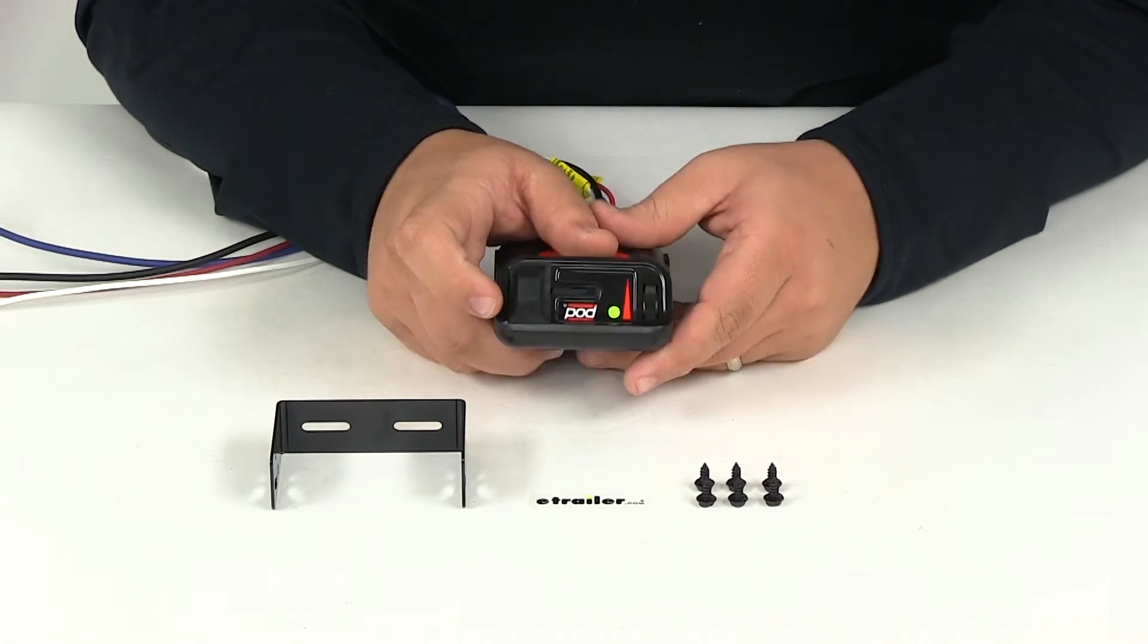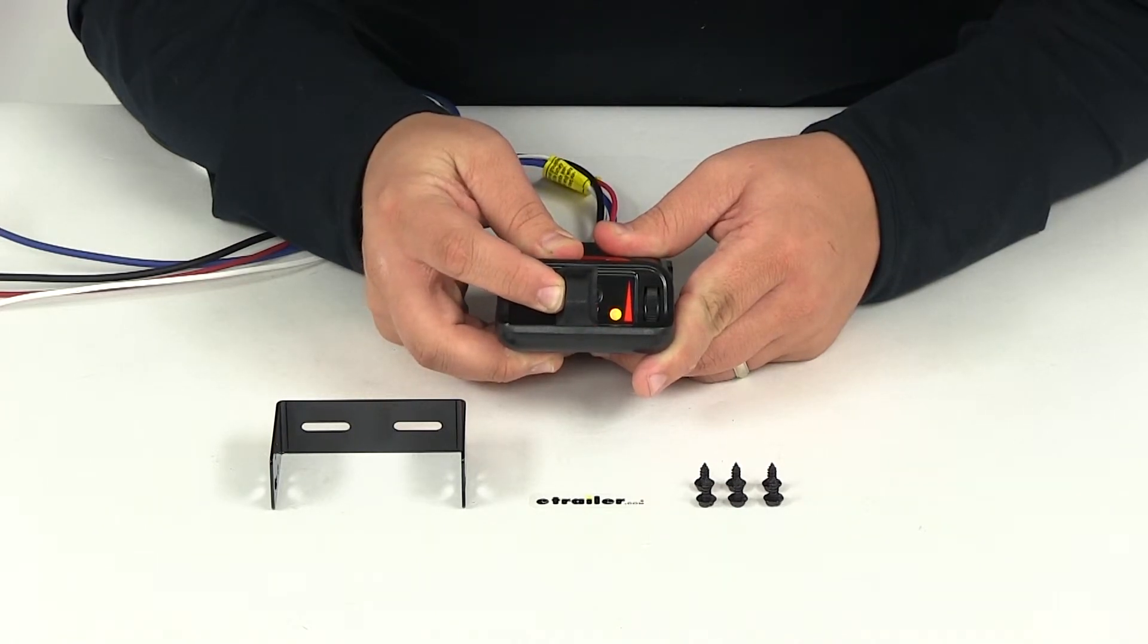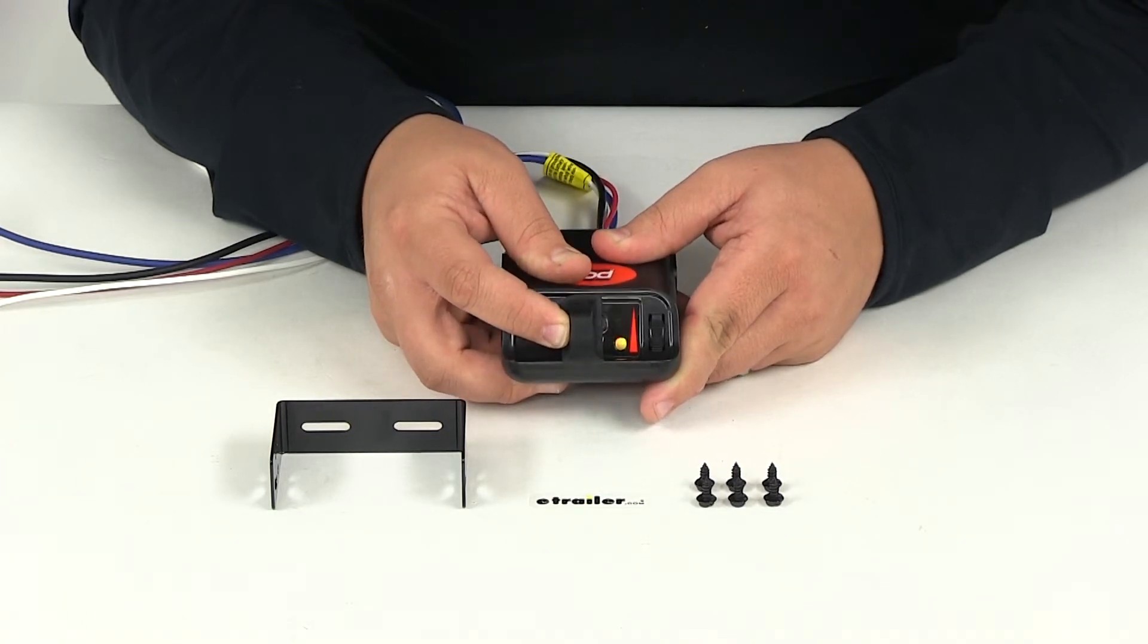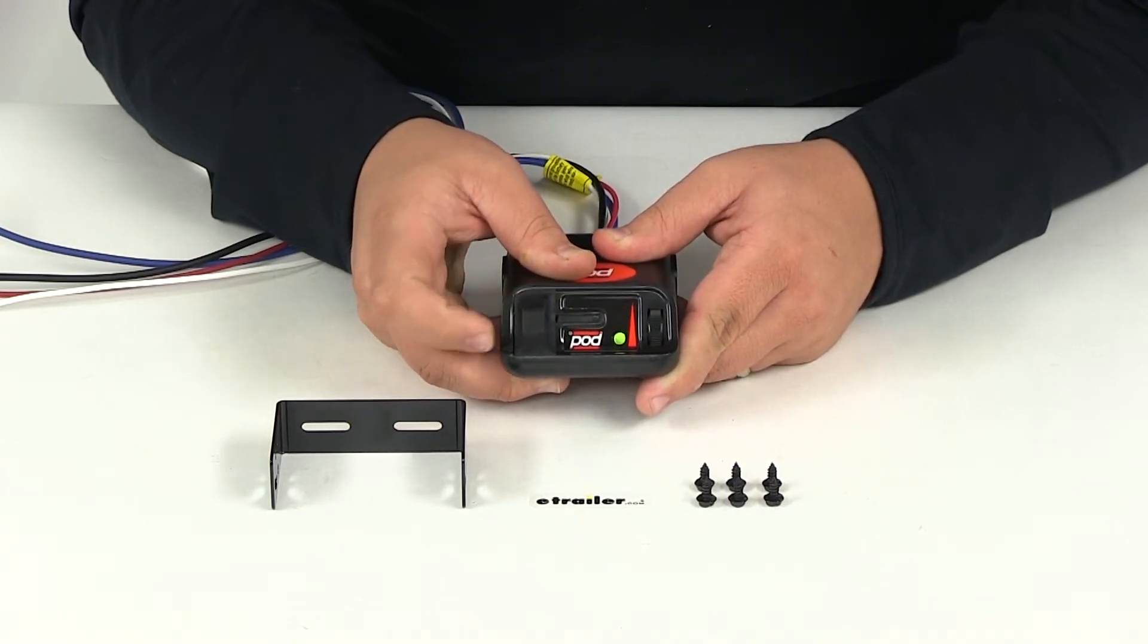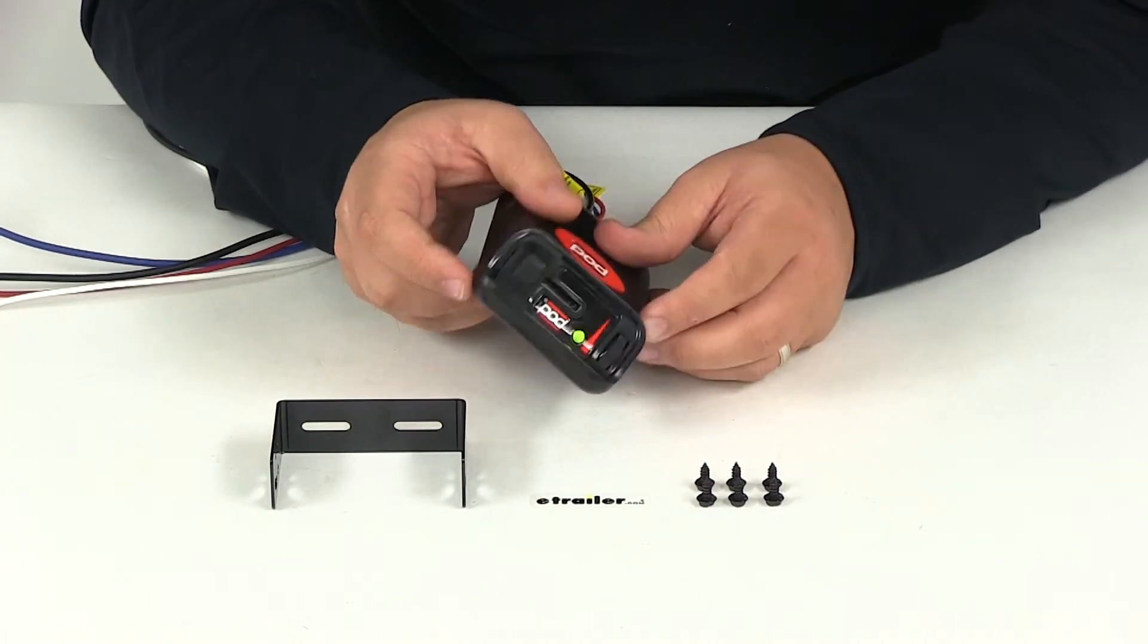And then it also features the manual override. So as I slide that over, the light changes color. It goes from green to orange to red. And then backing off and letting go, it goes back to that green indicator that signifies everything is connected correctly.